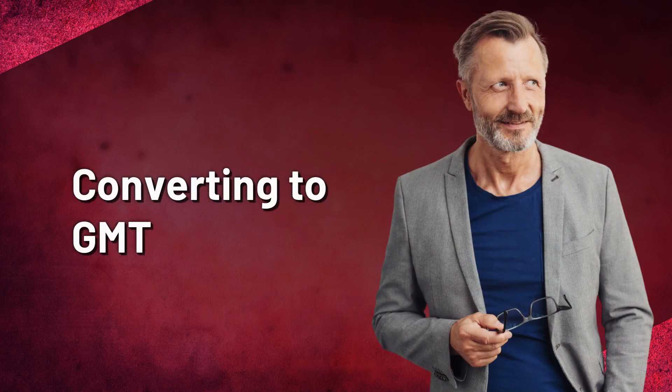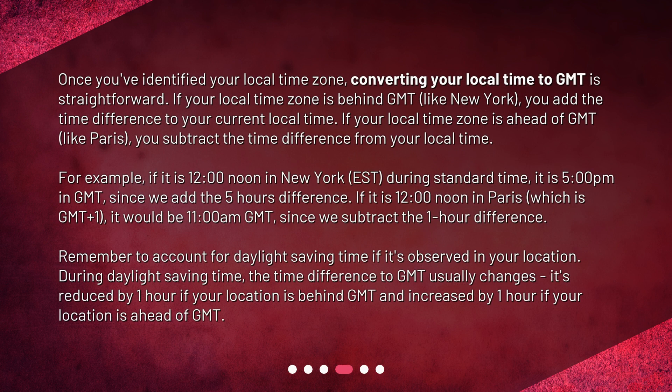Converting to GMT. Once you've identified your local time zone, converting your local time to GMT is straightforward. If your local time zone is behind GMT, like New York, you add the time difference to your current local time. If your local time zone is ahead of GMT, like Paris, you subtract the time difference from your local time. For example, if it is 12 o'clock noon in New York, EST, during Standard Time, it is 5 p.m. in GMT, since we add the 5 hours difference.